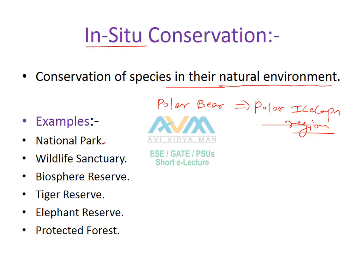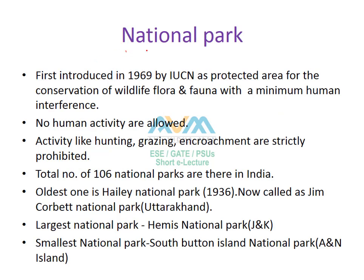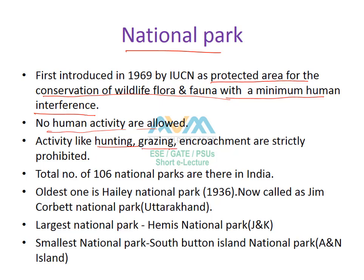Examples of protected areas under in-situ conservation include national parks, wildlife sanctuaries, biosphere reserves, tiger reserves, elephant reserves, and protected forests. A national park is a protected area where conservation practices are performed for flora and fauna with minimum human interference — activities like hunting, poaching, grazing, and encroachment are strictly prohibited.